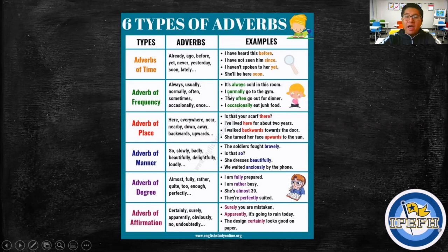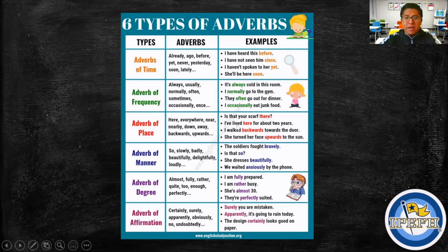Next, adverbs of frequency — such as: usually, sometimes, once. Examples: 'I normally go to the gym,' 'They often go out for dinner,' 'I occasionally eat junk food.' Then, adverbs of place — like: here, everywhere, near, nearby, down, away, backwards, upwards. Examples: 'Is that your scarf there?' 'I've lived here for about three years,' 'I went backwards towards the door,' 'She turned her face upwards to the sun.'